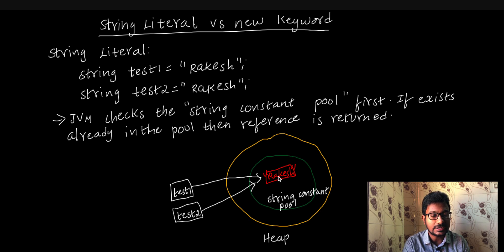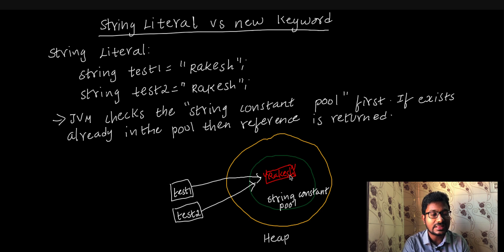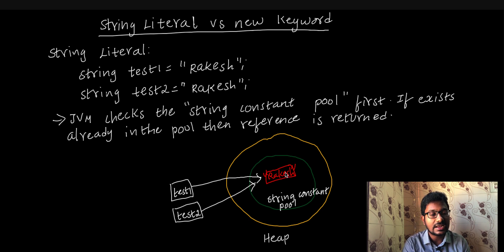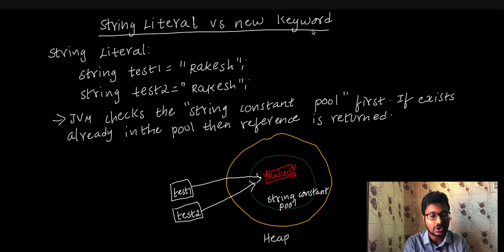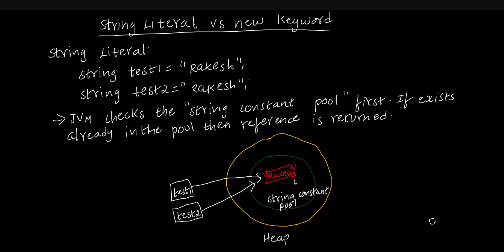JVM creates the object and returns the reference to this variable test1. The second time, string test2 equals 'Rakesh'. JVM checks the string constant pool — the 'Rakesh' data is already there, so it will be reused and return the reference to test2. What are the advantages? It makes memory more efficient.